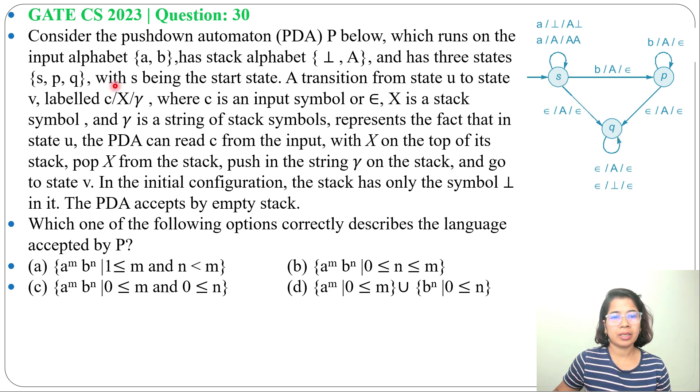S, P, Q are three states, with S being the start state. The PDA description is given. Just go through it. Which of the following options correctly describes the language accepted by P? In four options, four languages are given.